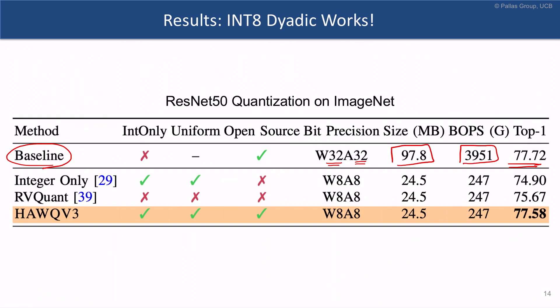The prior state-of-the-art from Google is the integer-only approach, which uses integer arithmetic and achieves 75.90% accuracy. Our approach achieves significantly better accuracy of 77.58%, due to the way we treat the batch norm layers. Importantly, we're able to achieve better accuracy than even floating point quantization approaches that use FP32 arithmetic, such as RVQuant.